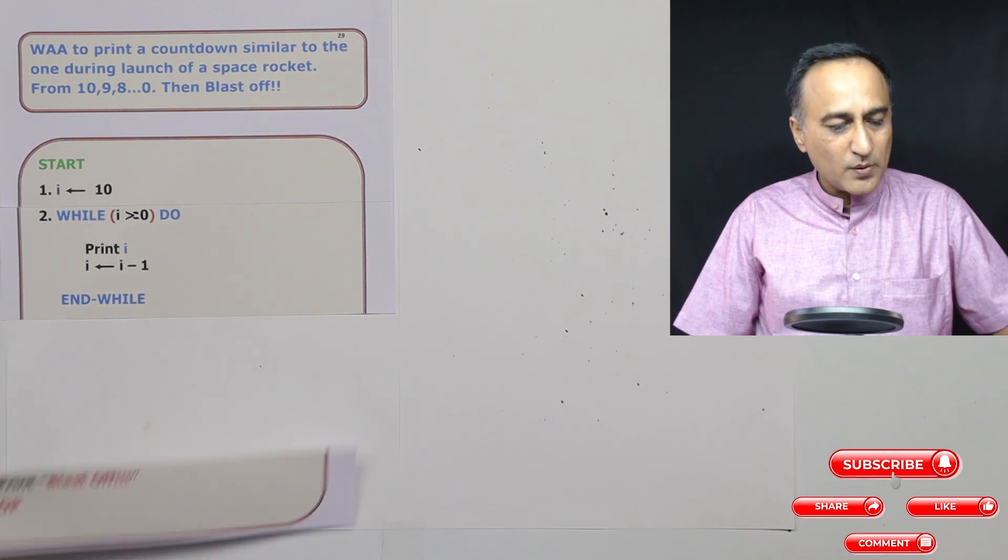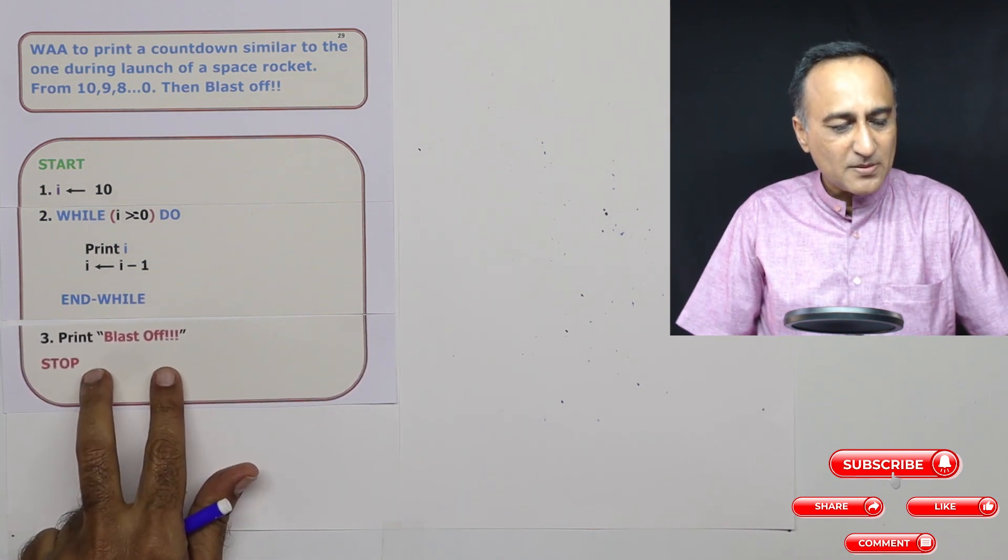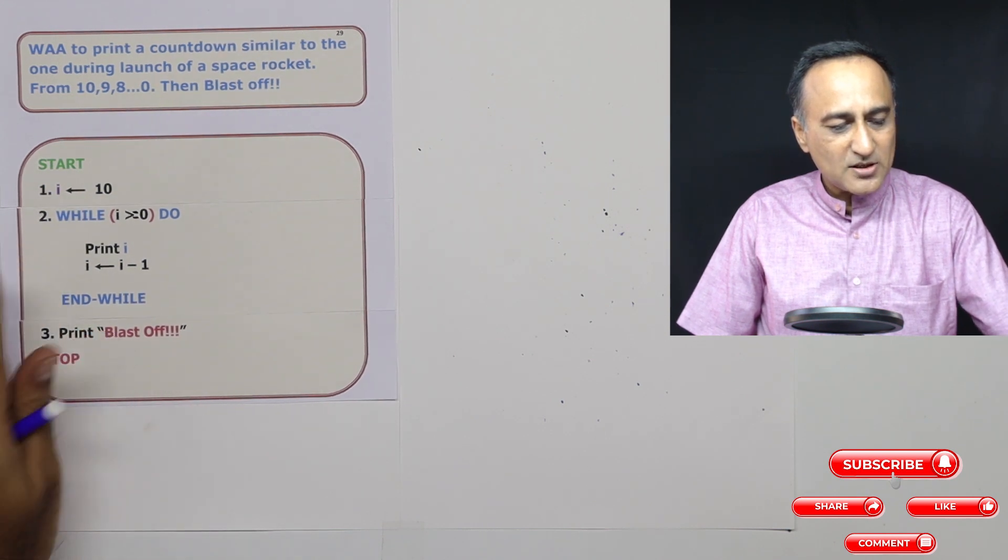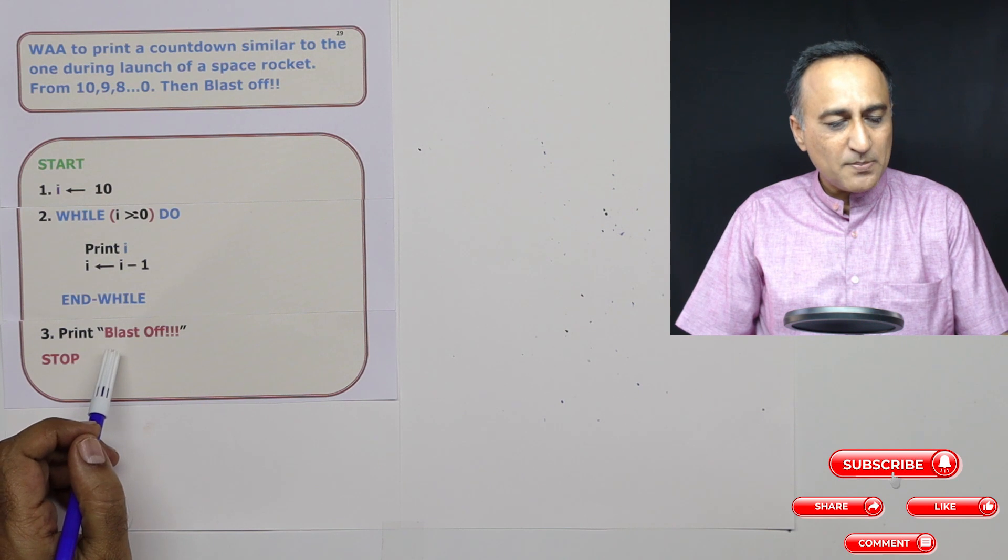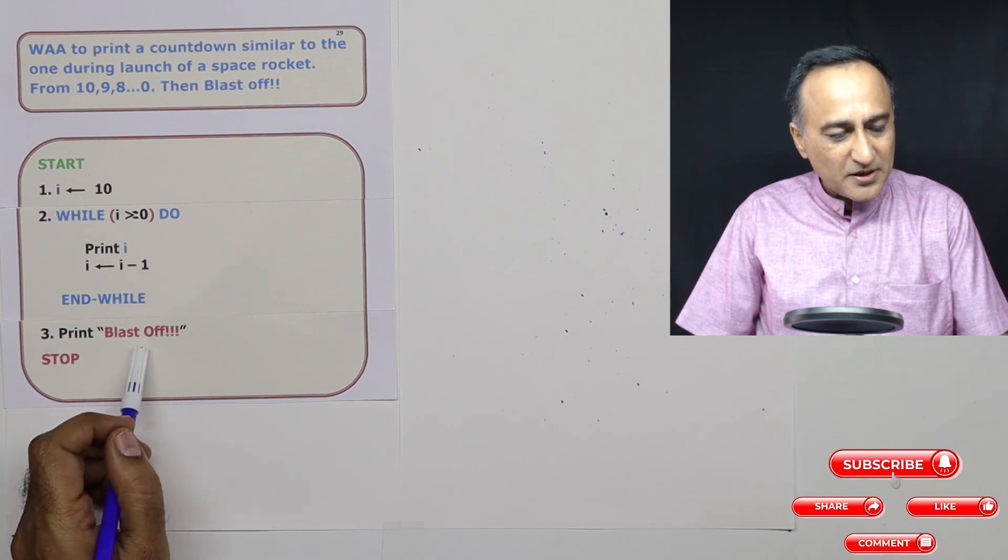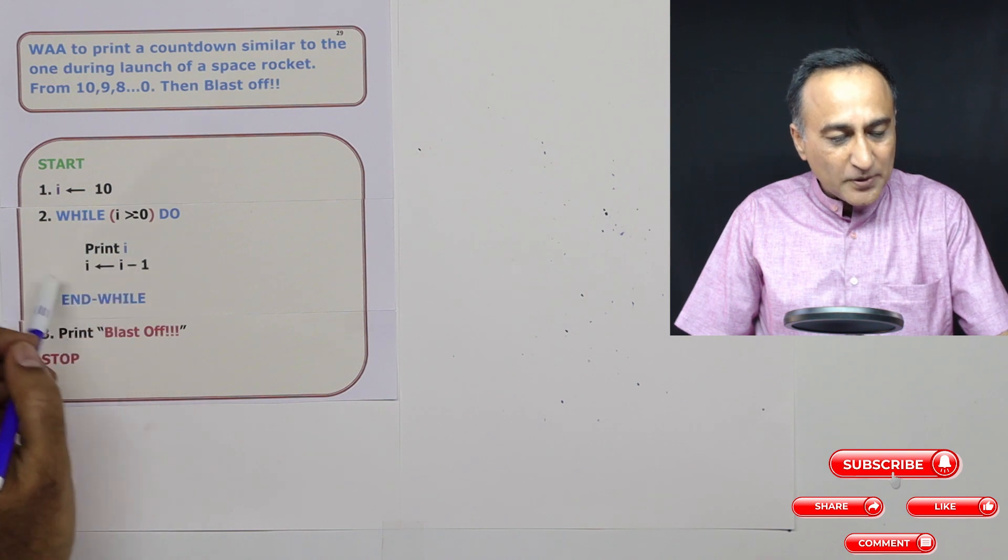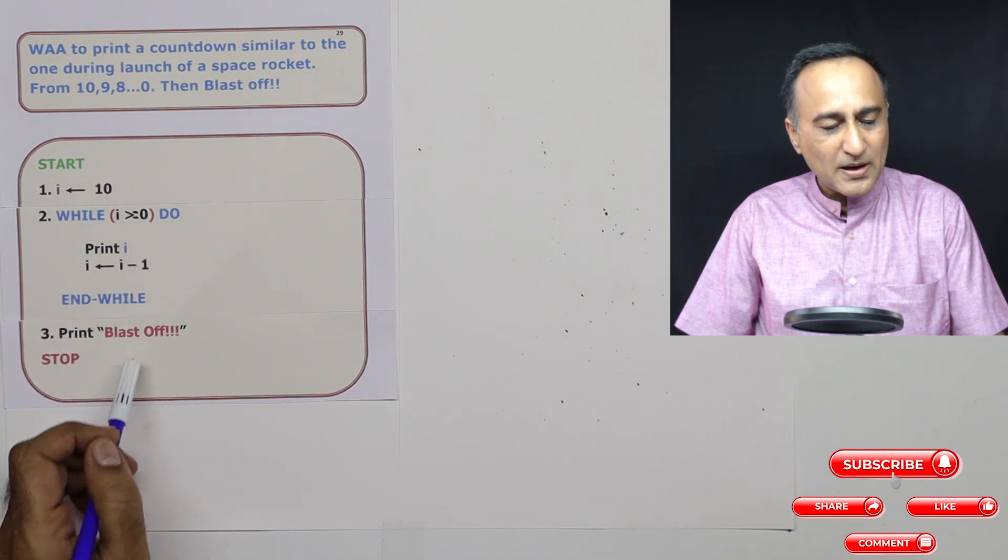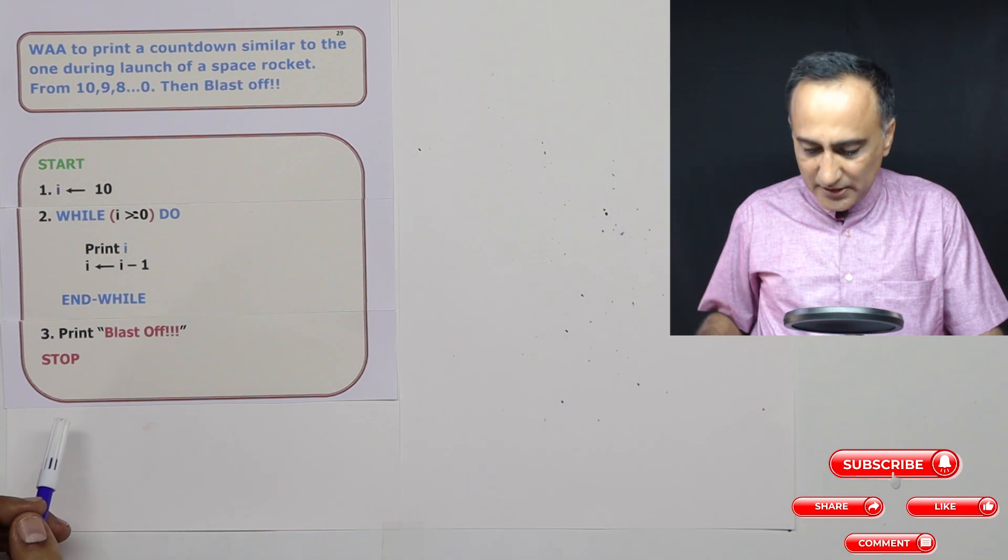So in step number three, what we will do is we'll print the message blast off. So at step number three, this message blast off is going to be printed. If you put this print blast off in the loop, it is going to print blast off after every number. That's why you should put print blast off at the end of the while loop.